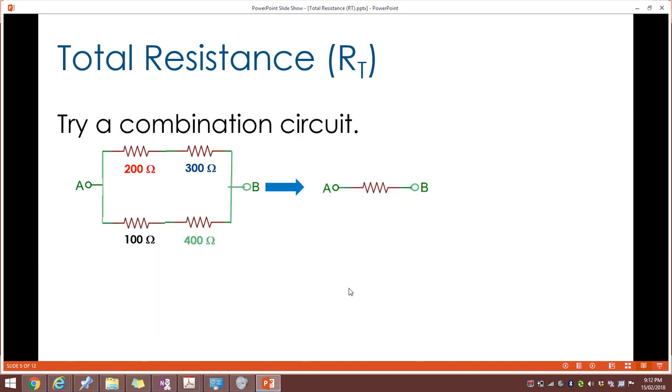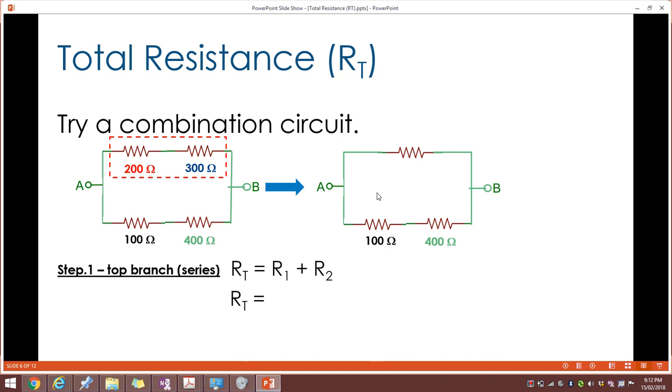Let's look at a combination circuit. We can see here we have two parallel branches but within each branch there are two resistors in series. Yet again this can be represented as one single or total effective resistance. Step by step looks at the top branch first. The top branch is combining the 200 ohm and the 300 ohm resistor. We put those in and we end up with an effective resistance in the top branch of 500.